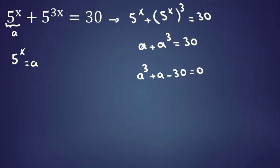If we check a equals 2, 2 cubed plus 2 equals 10, doesn't work. a equals 3 is a root because 3 cubed plus 3 minus 30 equals 27 plus 3 minus 30, which is 30 minus 30, equals 0.